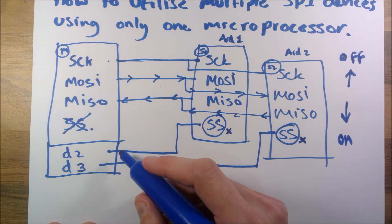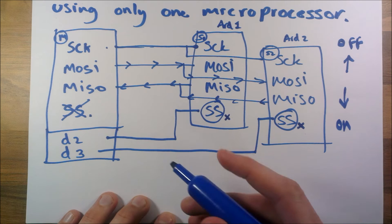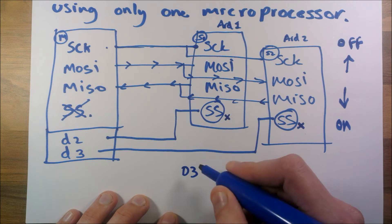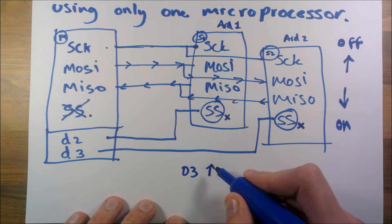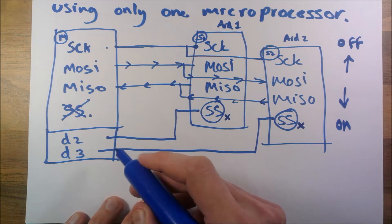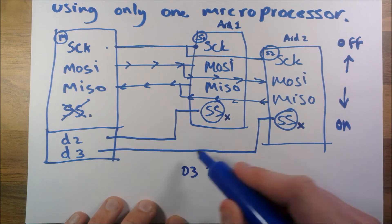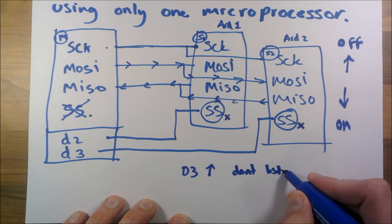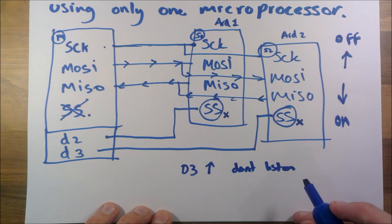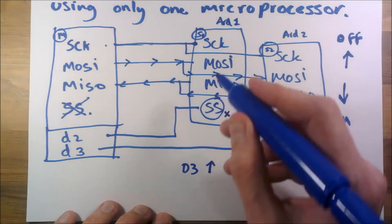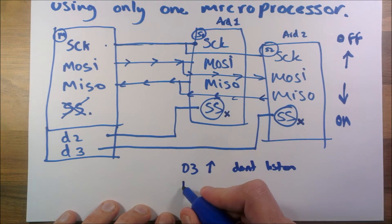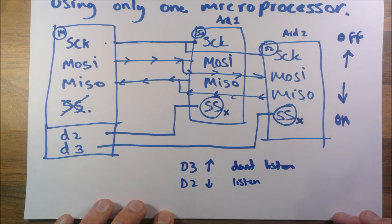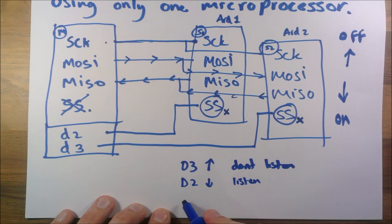What we do in code is - this is pseudocode by the way - D3 high. So digital three, that means digital three which is Arduino two high, so don't listen. And we'd have to actually make sure that D2 is low, so D2 low - listen. Then we'd transmit any data.